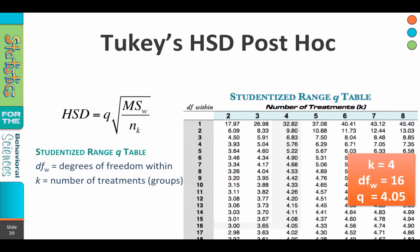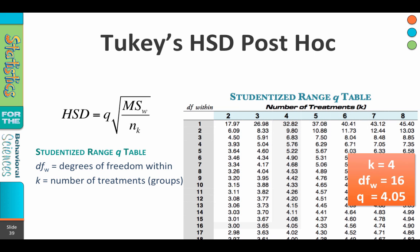Q is a constant that we can determine from a table known as the studentized ranged Q table. For this Q value, we need to know K — that's the number of treatments — and the degrees of freedom within. This comes from our ANOVA summary table.